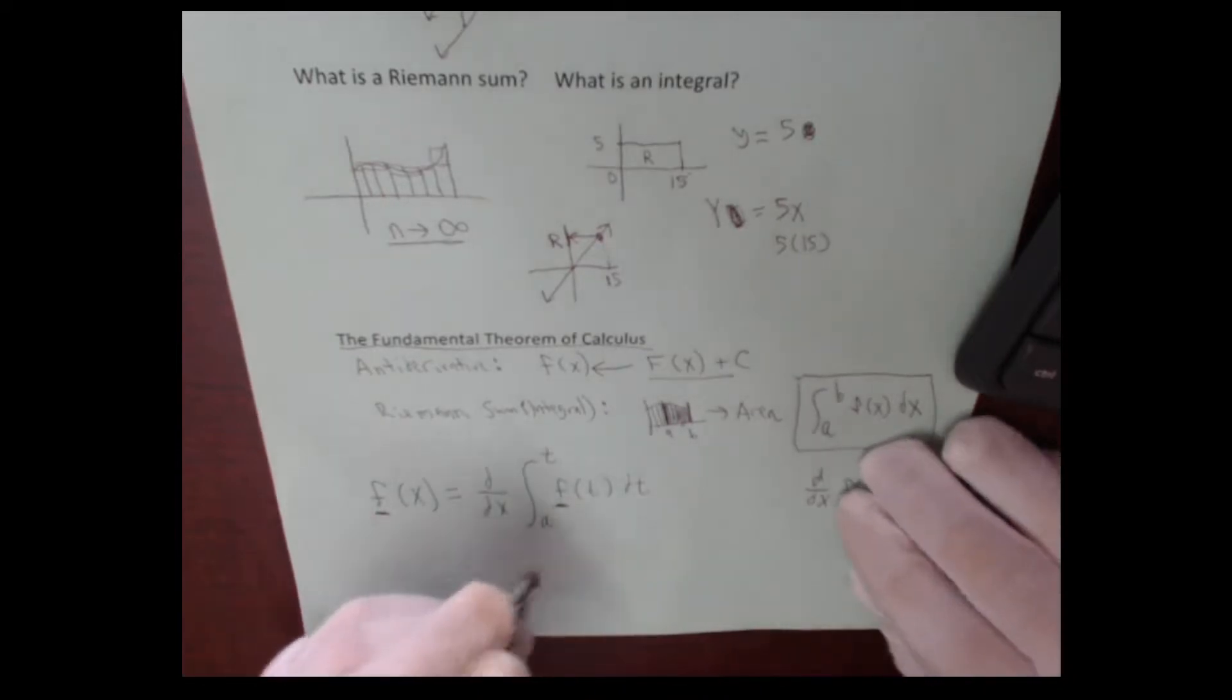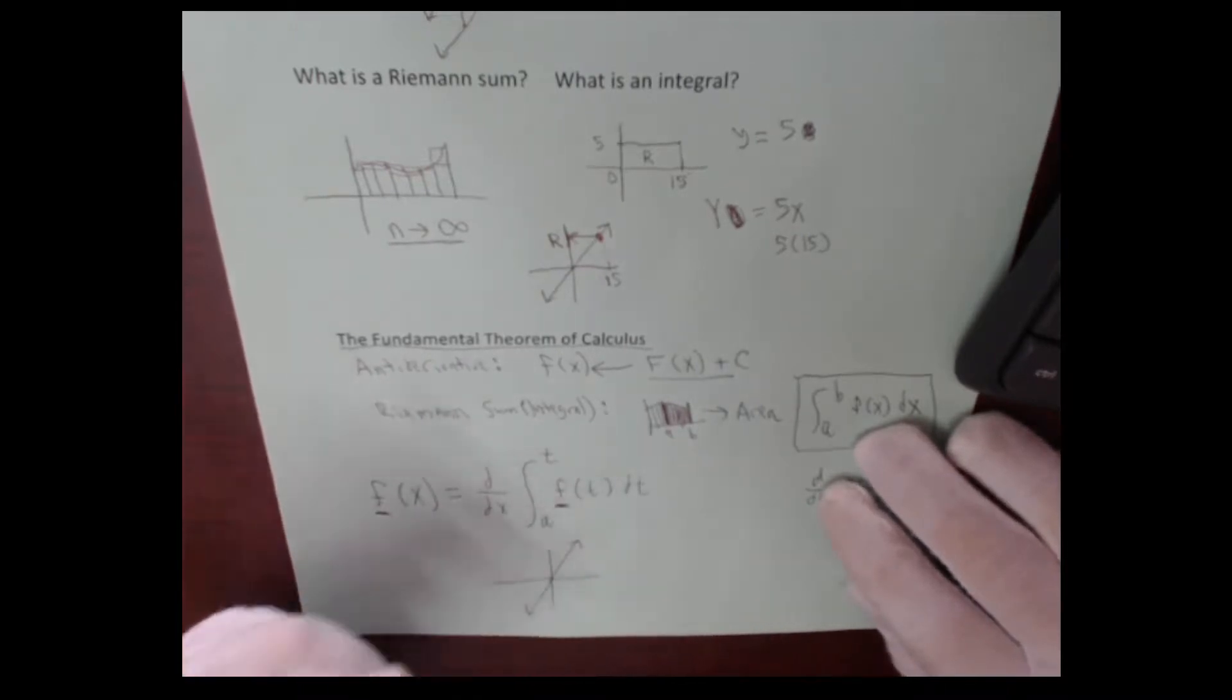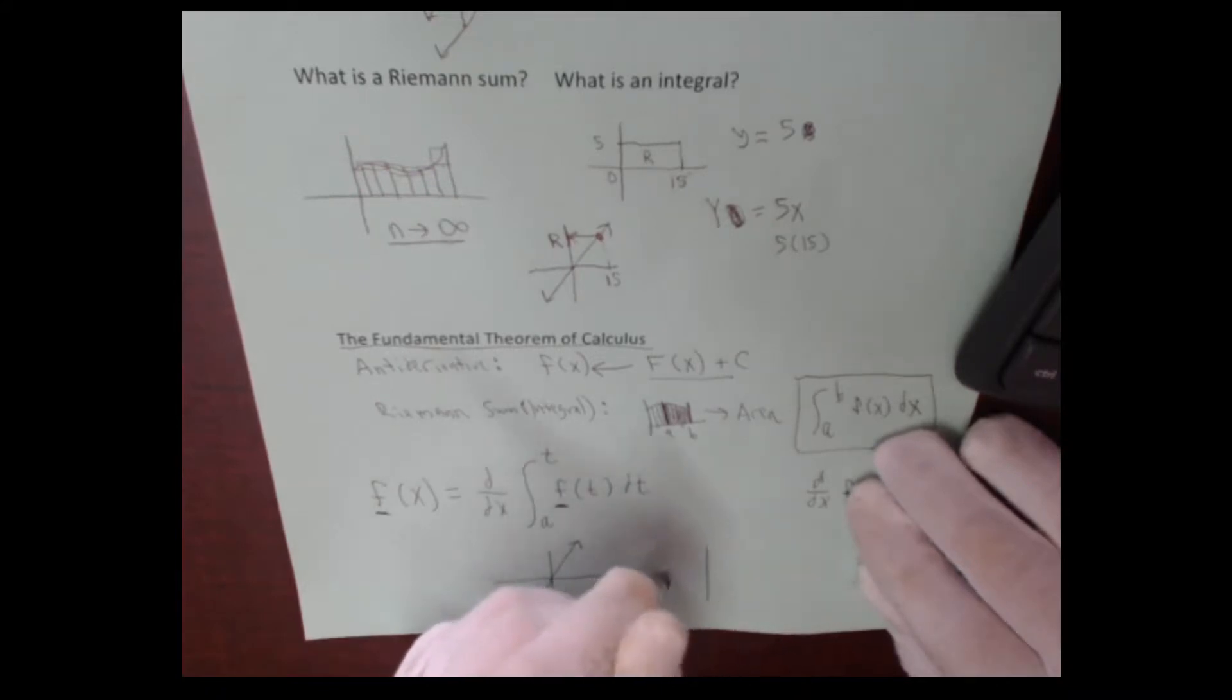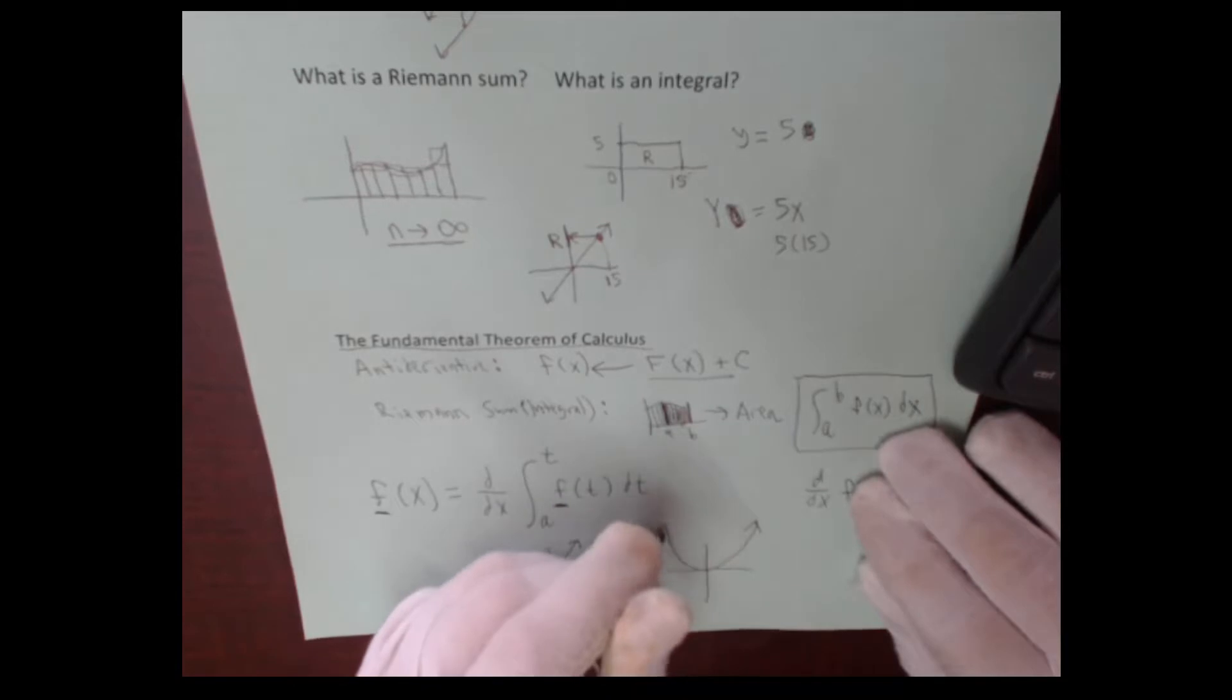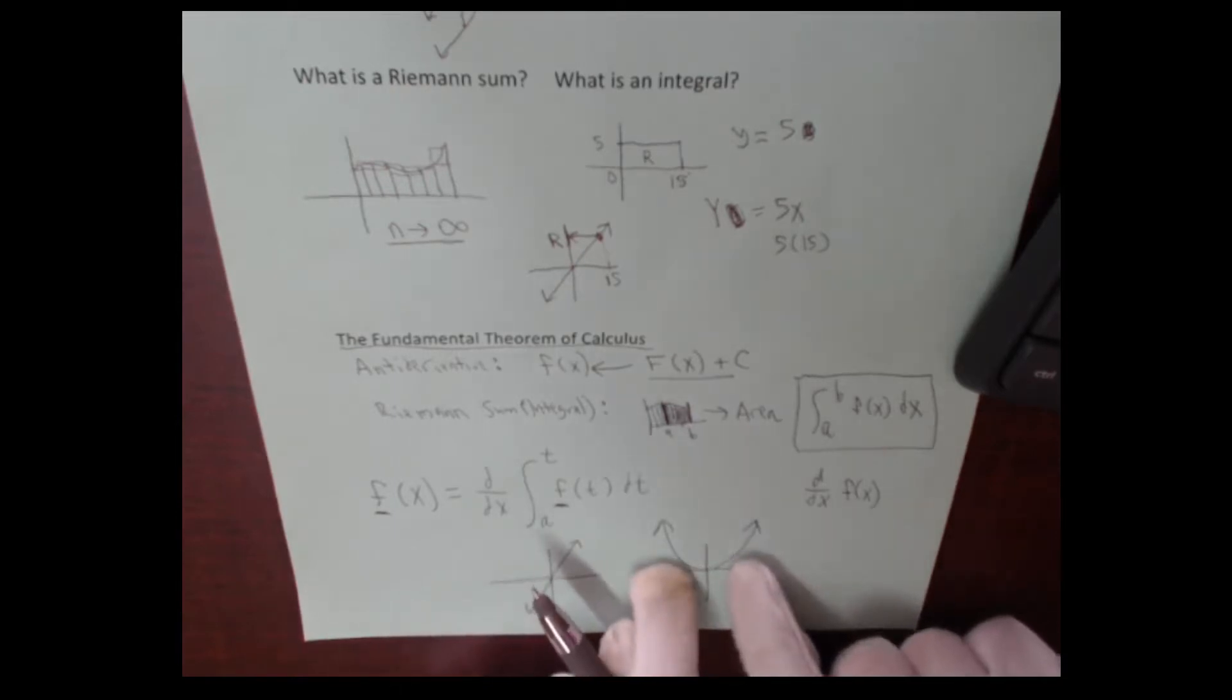Visually, what this is saying is the following. Let's do the integral of something slightly different. Let's start with a line this time. And we know that the antiderivative of that is a parabola. So the derivative of this is this. The antiderivative of this is this plus c.